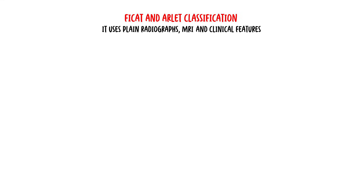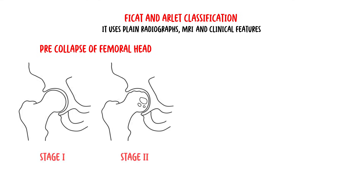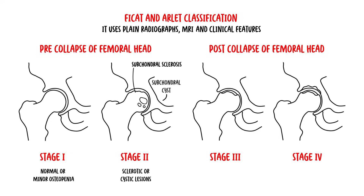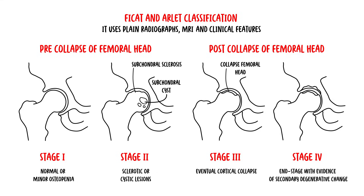Regarding classification of osteonecrosis of the hip, the Ficat and Arlet classification was the earliest and remains the most widely utilized. It uses plain radiographs, MRI, and clinical features to place osteonecrosis into stages: pre-collapse stages (1 and 2) and post-collapse stages (3 and 4). In stage 1, the femoral head looks quite normal with minor osteopenia. In stage 2, there are sclerotic lesions and possibly subchondral cysts. In stage 3, the round appearance of the femoral head is lost. In stage 4, both the femoral head and acetabulum lose their roundness, and significant painful secondary osteoarthritis develops.